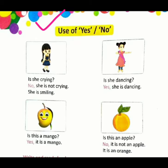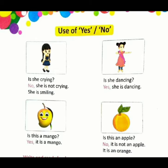Okay, so first picture. Is she crying? Kya yeh rori hai? I don't think so. Nahi — no, she is not crying. She is not crying. Woh nahi rori hai. She is smiling. Woh has rahi hai.